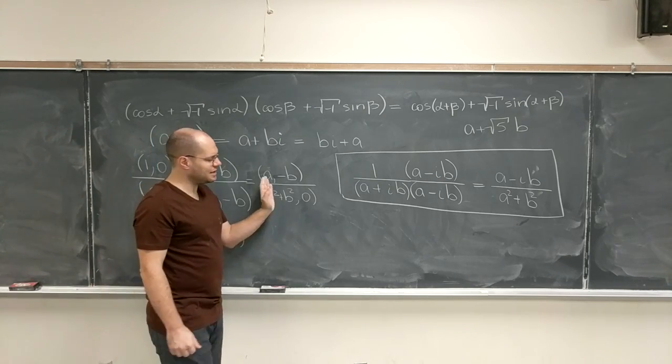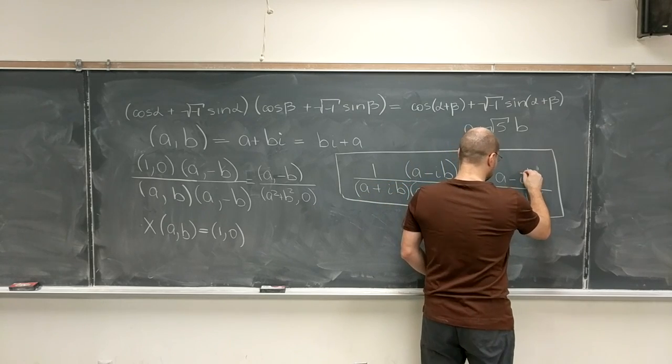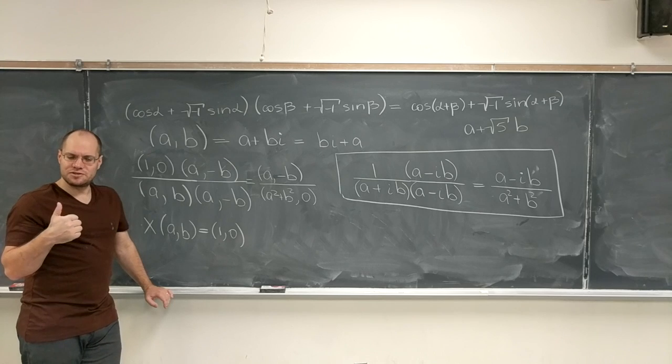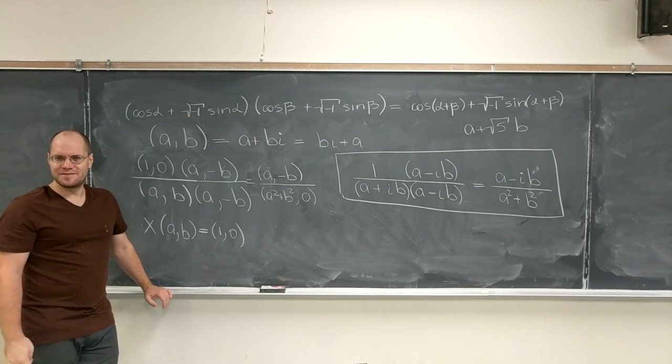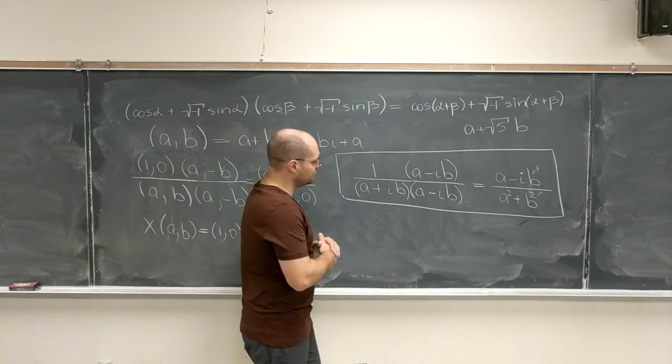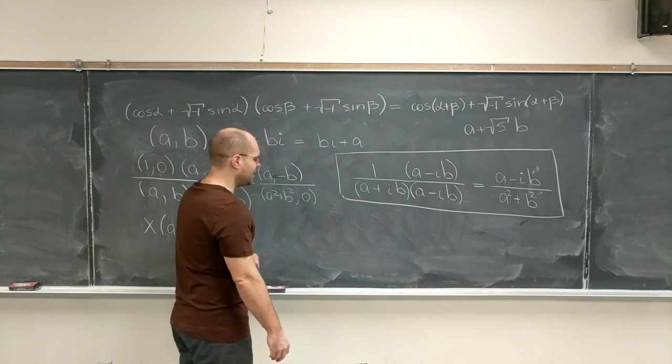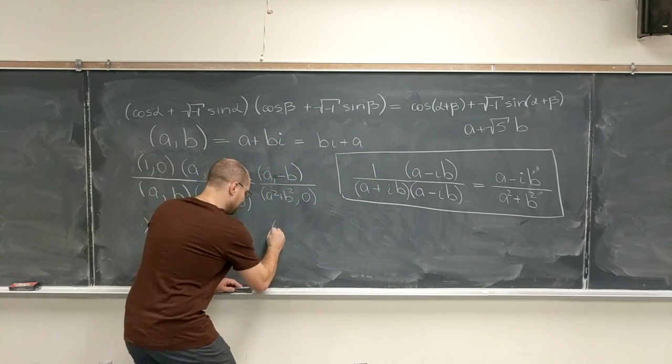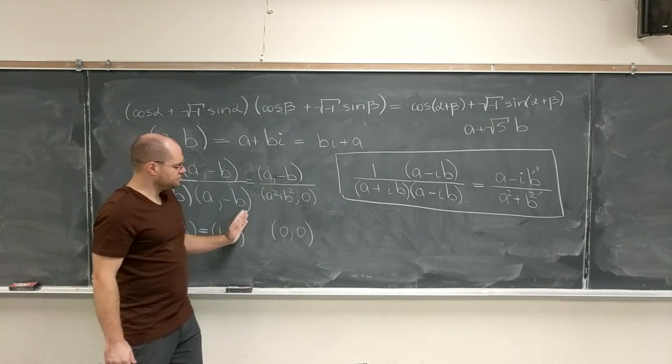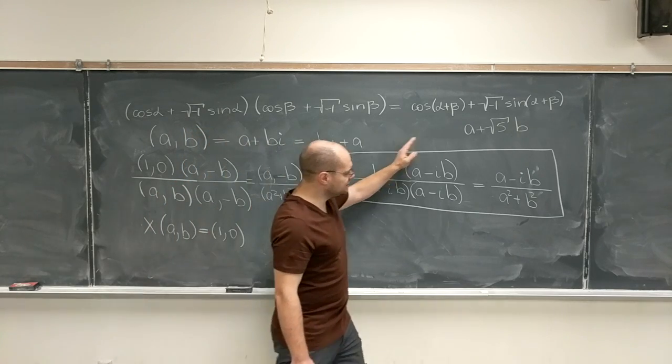And so this shows that complex numbers form a field. There's addition, there's multiplication that satisfies all of the usual rules like commutativity, distributivity, associativity, everything. And every non-zero number, and by zero we mean the pair (0, 0), the additive zero—so every number that's not zero has a well-defined inverse.